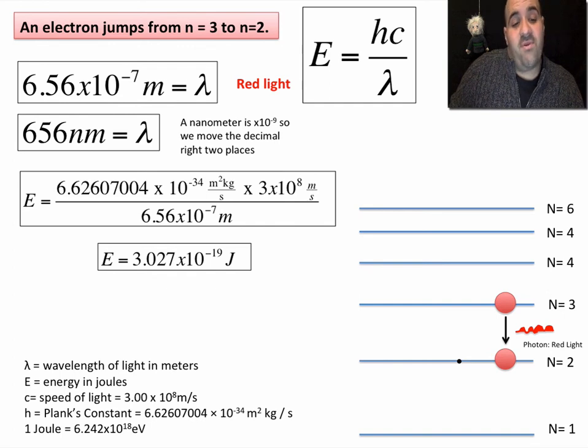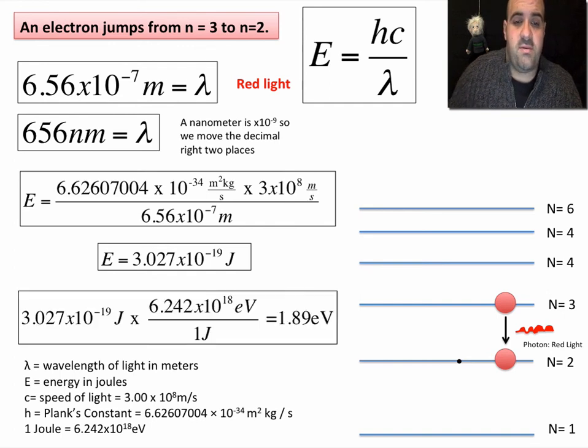To convert that into electron volts, the unit we're starting with is the unit we want to get rid of. So we set up a conversion factor. Start with what you're converting. Put the same unit down here so you can cancel it. What's your conversion factor? One joule equals 6.242 times 10 to the 18th eV. When you multiply these two numbers together, you end up with 1.89 electron volts.